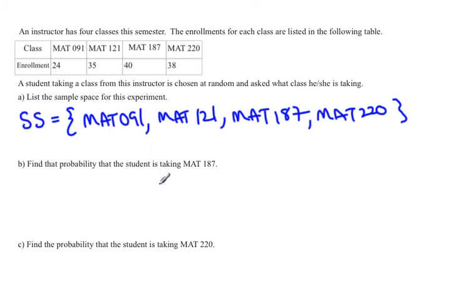Once you have that then it's easy to try to figure out some different probabilities. The first question is to find the probability the student is taking math 187. So it's a good idea to rewrite this in a mathematical statement. So we're trying to find the probability of math 187. So that's the event we're looking at out of this sample space.